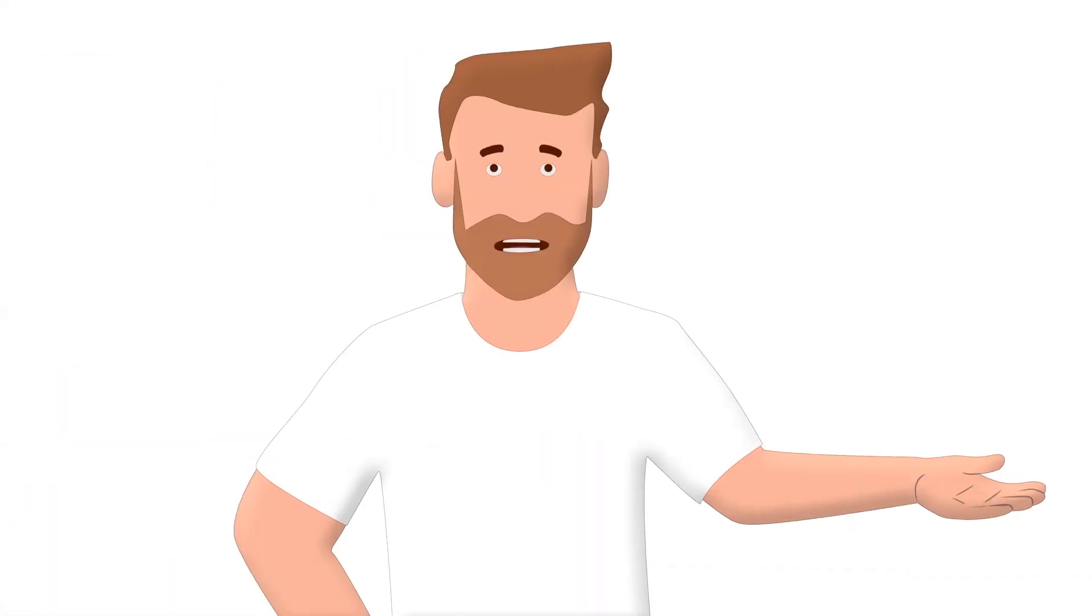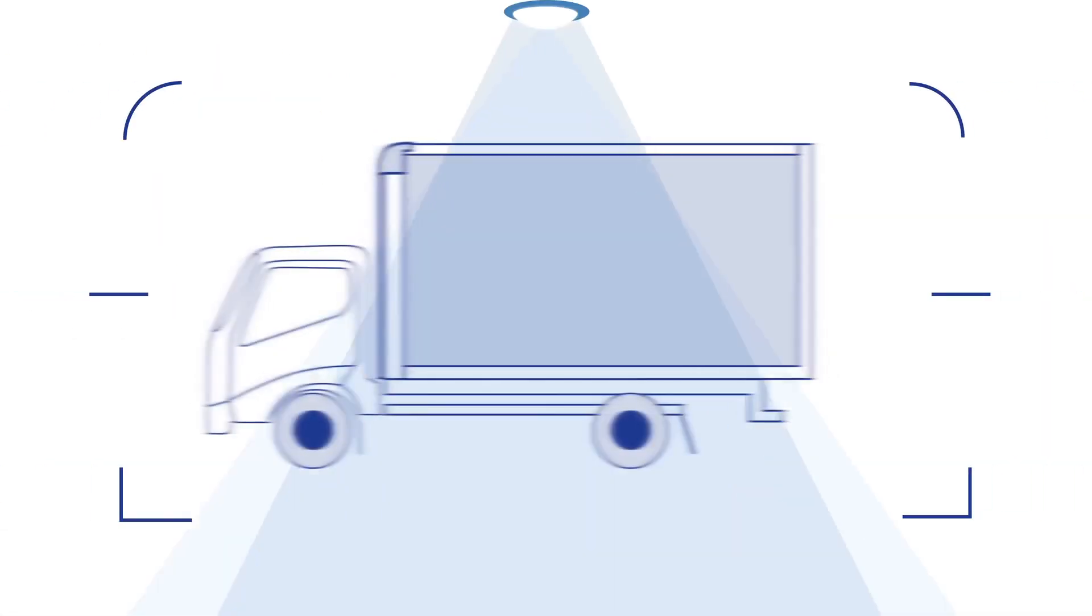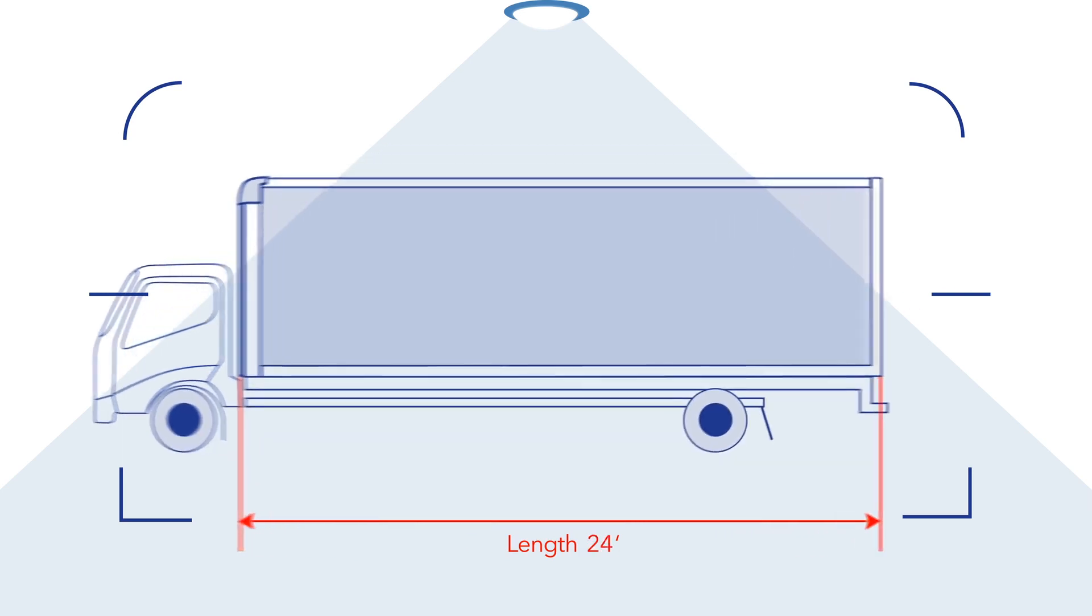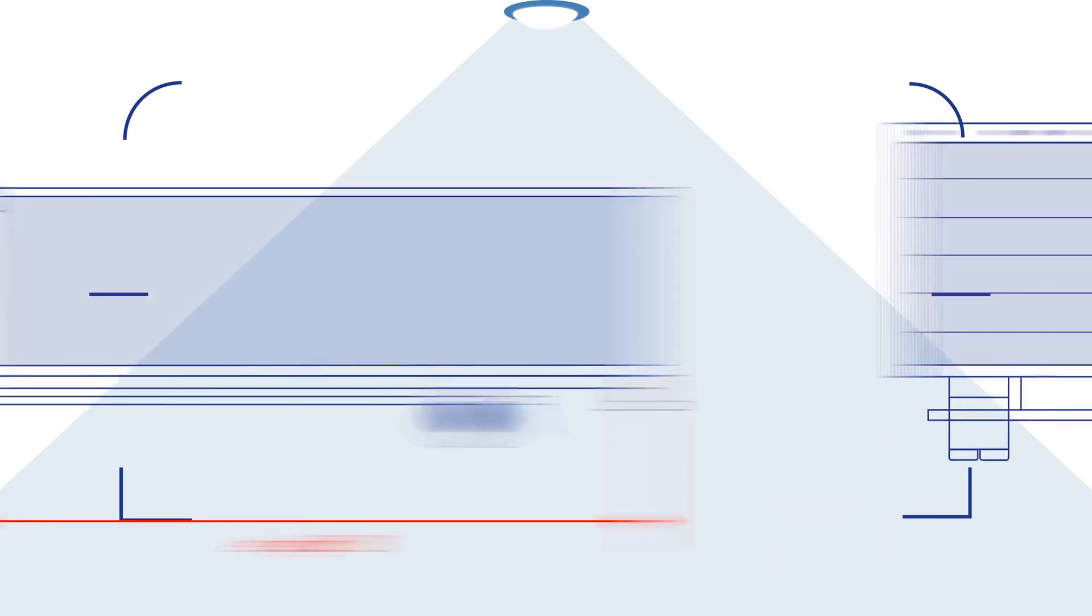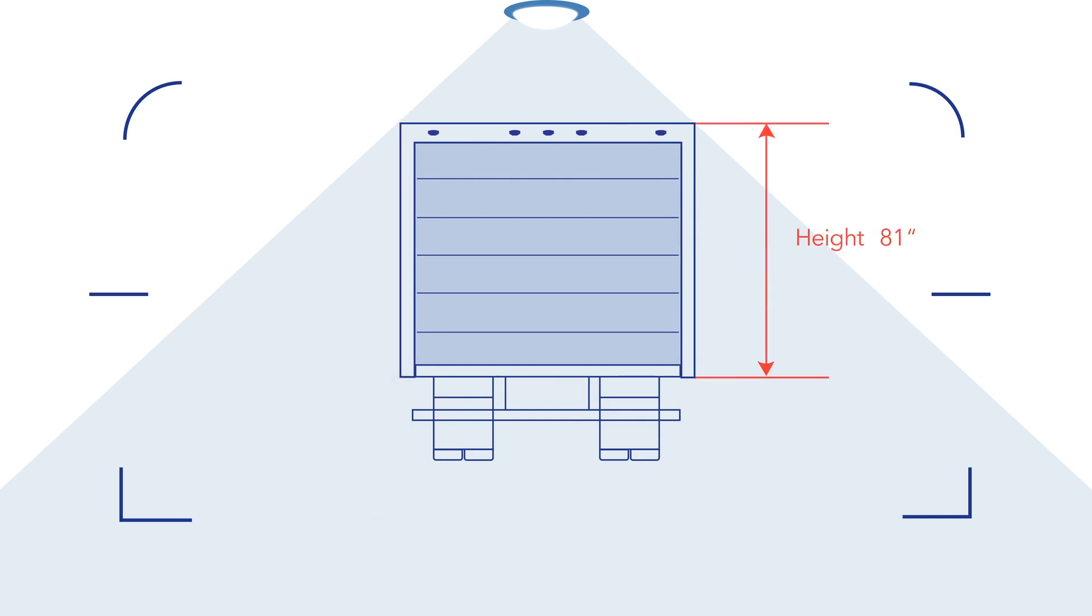And that brings us to our next question. Question number two, what are you hauling? More specifically, what type of space do you need to haul what you haul? Morgan's dry freight bodies come in lengths that range from 10 feet up to 28 feet, widths of 96 to 102 inches, and heights of 79 up to 109 inches, and that's standard.